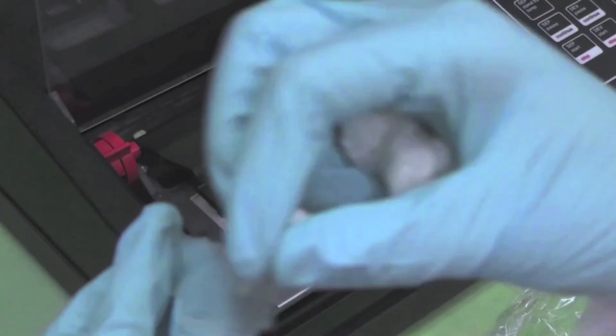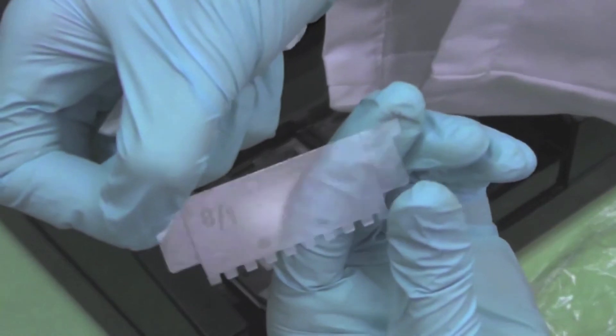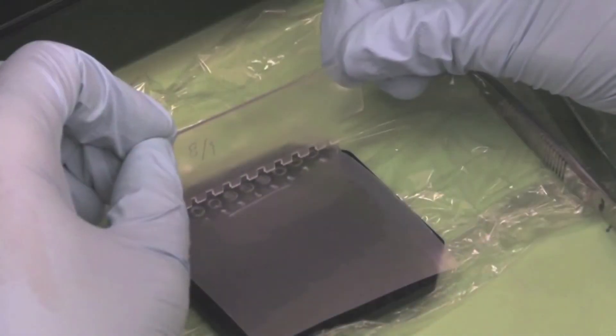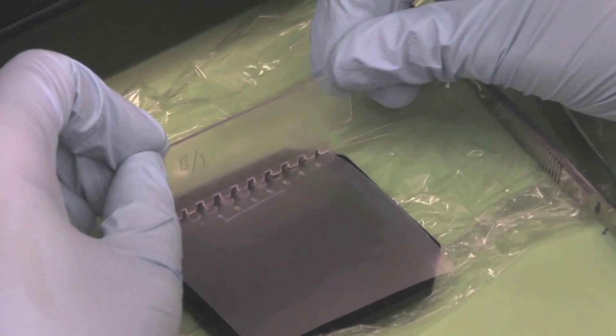Once all the samples have been placed, remove the 8-slash-1 sample applicator from the ziplock bag. 8-slash-1 refers to 8 lanes each with 1 microliter. Align the 8 teeth of the applicator with the 8 wells on the parafilm and gently touch the sample to obtain 1 microliter.